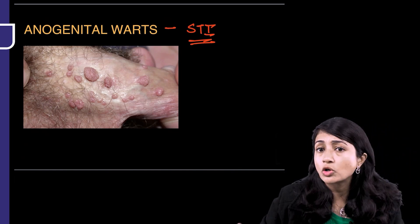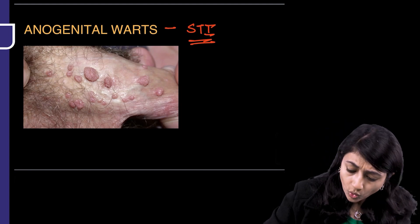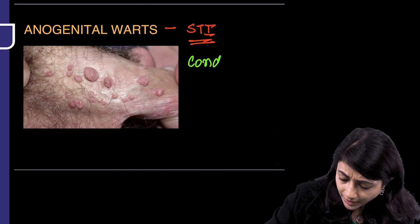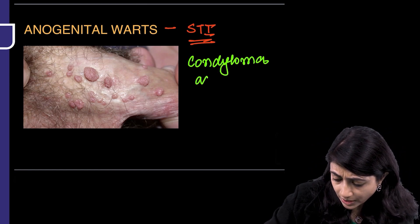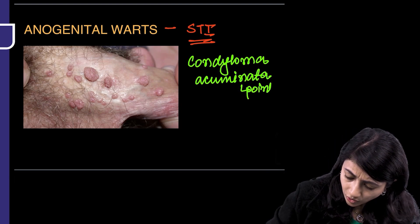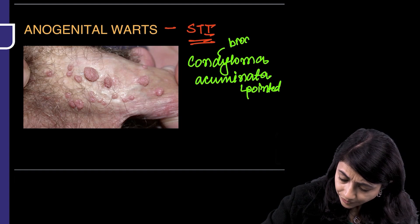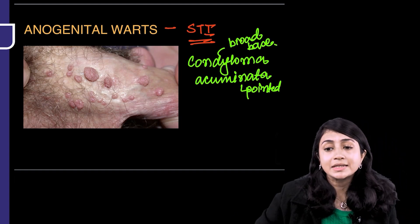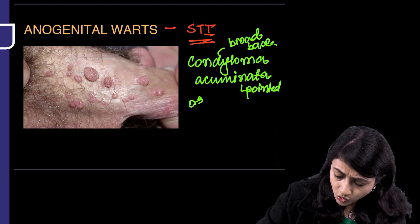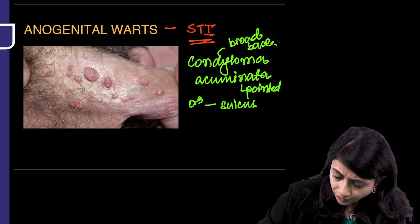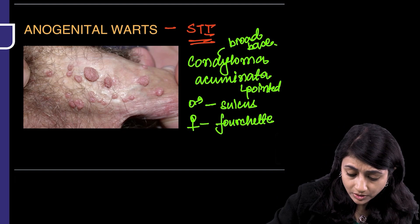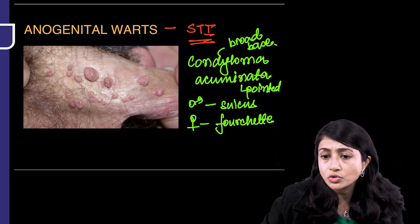Even if present in a child, rule out child abuse. Anogenital warts are also referred to as condyloma acuminata — acuminata means pointed and condyloma means broad base, so they are pointed broad-based lesions. In males you usually see them on the sulcus, and in females on the fourchette at the site of sexual trauma.